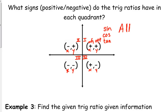In the second quadrant, let's look at sine. Sine is the opposite or the y over the hypotenuse, so sine is positive. Cosine is the adjacent or the x over the hypotenuse, so that's a negative over a positive, which is negative. And tangent is the opposite over the adjacent, or y over x, so positive over a negative is negative. So in the second quadrant, sine is the only positive trig ratio.